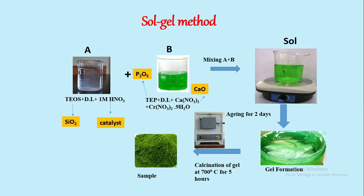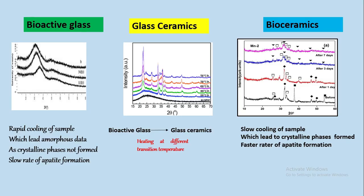Then we mix solution A and B, and sol formation takes place. Further aging for two days leads to gel formation. Further calcination of this gel at 700 degrees Celsius for five hours leads to the formation of our sample.